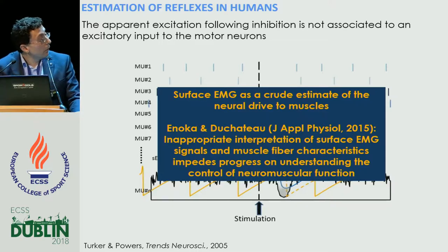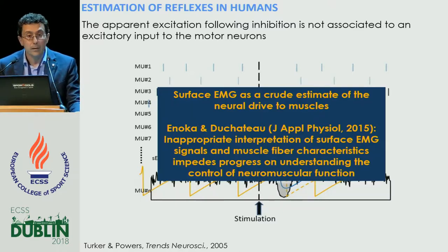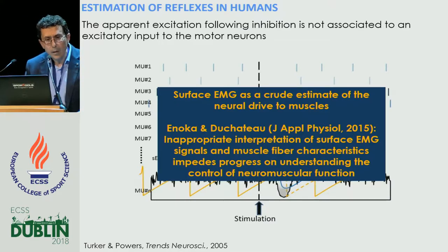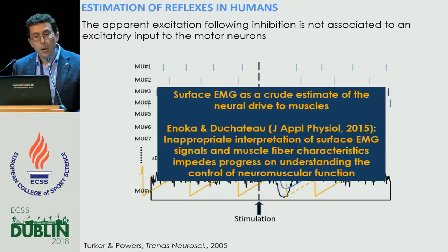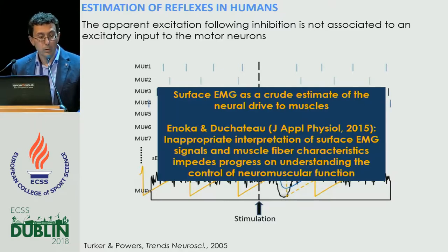Roger, who is giving a talk immediately after, and Jacques Duchateau summarized this recently by saying that inappropriate interpretation of the surface EMG is one of the reasons that impedes progress in our understanding and control of neuromuscular function.